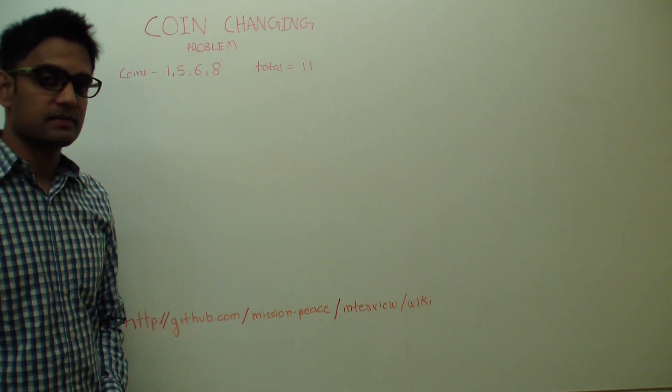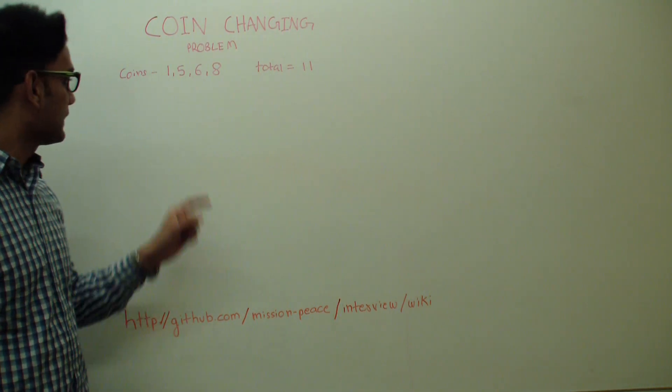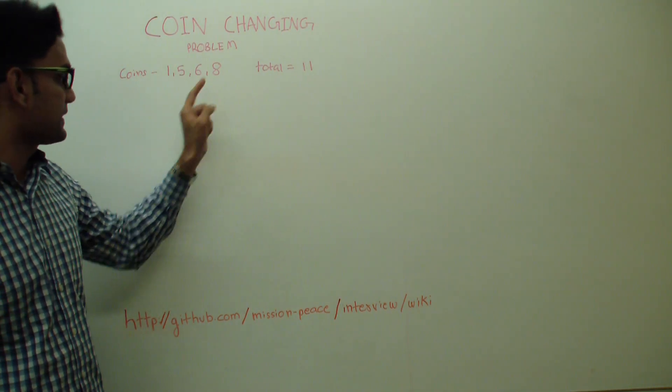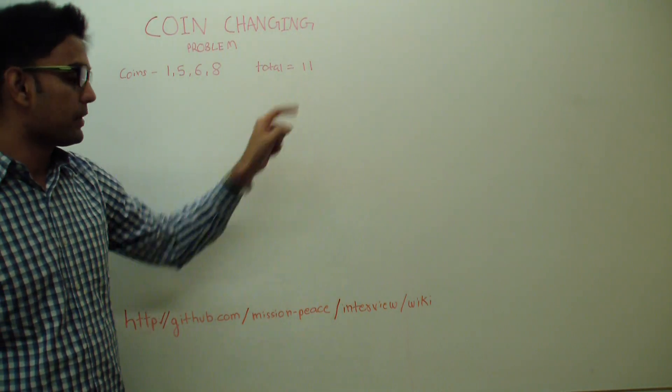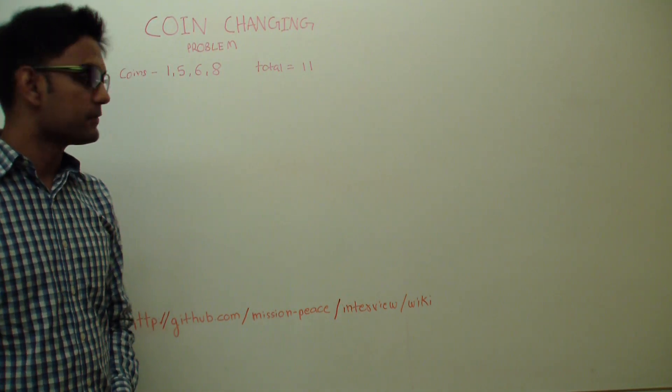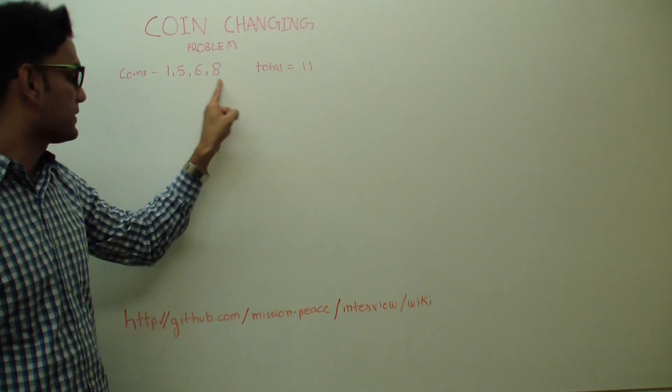So the question is, given coins of different denominations, in this case 1, 5, 6 and 8, and a total 11, how many minimum coins would you need to get this total from these denominations?